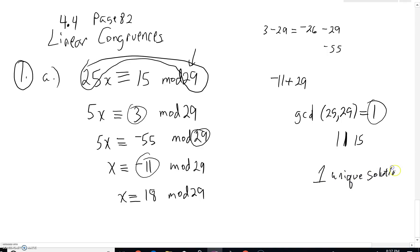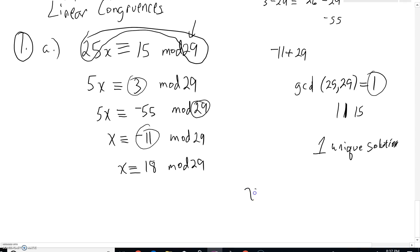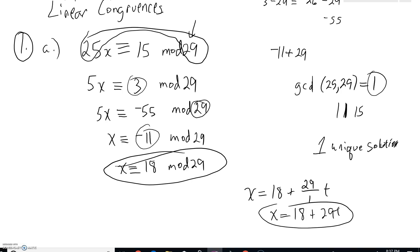And in fact our unique solution is going to be x is congruent to 18. Another way we could write this, the way our author was writing it, is to say it's 18 plus our mod divided by that greatest common divisor of 1 with a t. So x would be 18 plus multiples of 29.